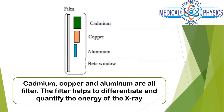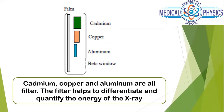Here is an unprocessed exposed film. You can see cadmium is a bit thicker, copper is relative, aluminium is small, and this window area is quite empty. The filter helps to differentiate and quantify the energy of the x-ray. For example, if exposing with about 70 kVp, cadmium will attenuate more of the beam, so a little amount of radiation emanates out there; for copper, more comes through because the thickness is not as high.